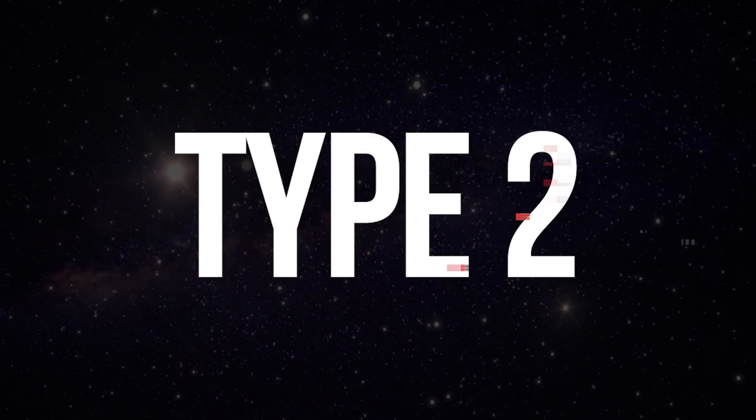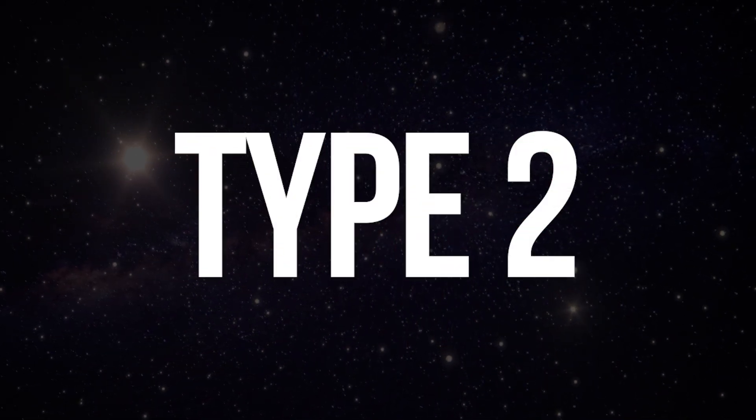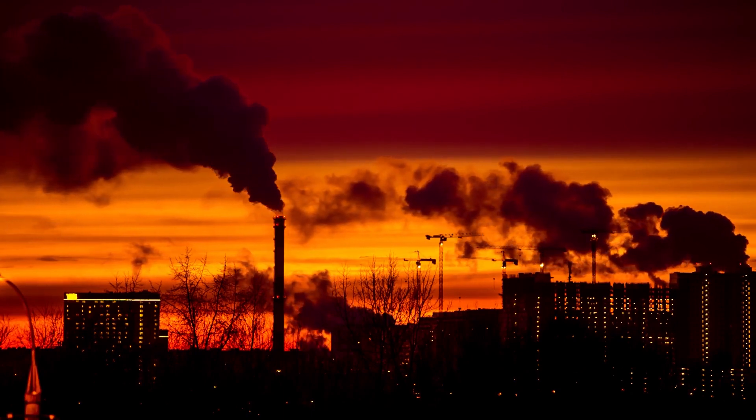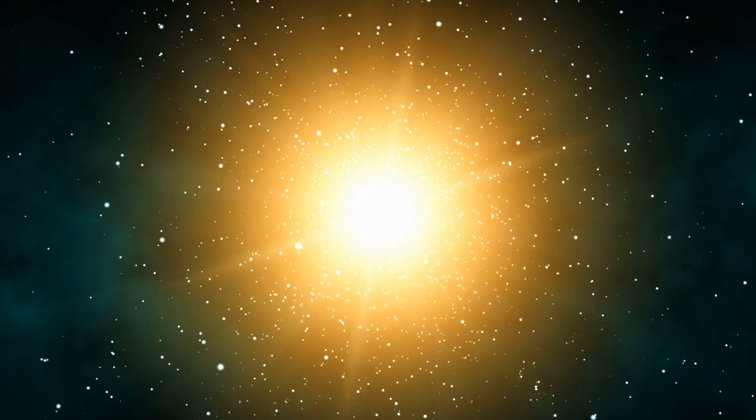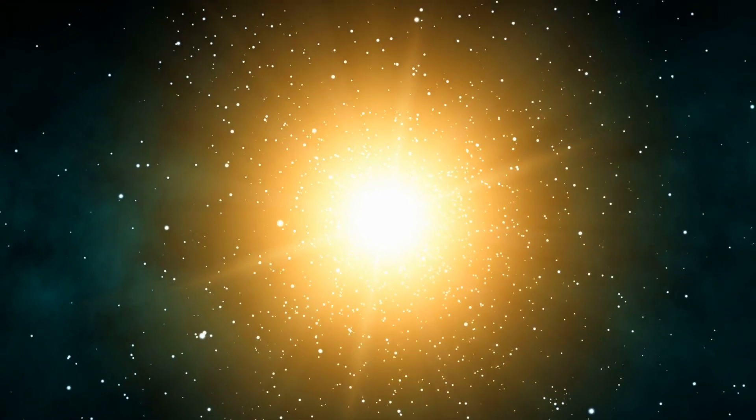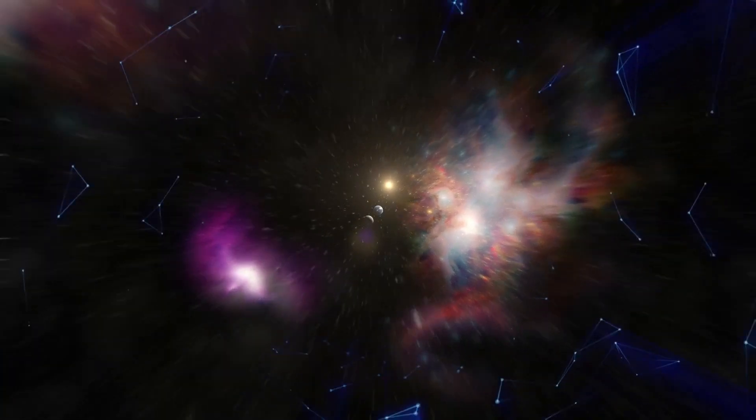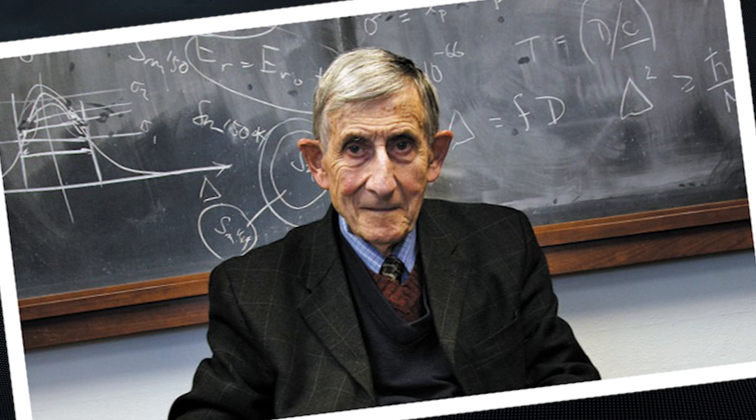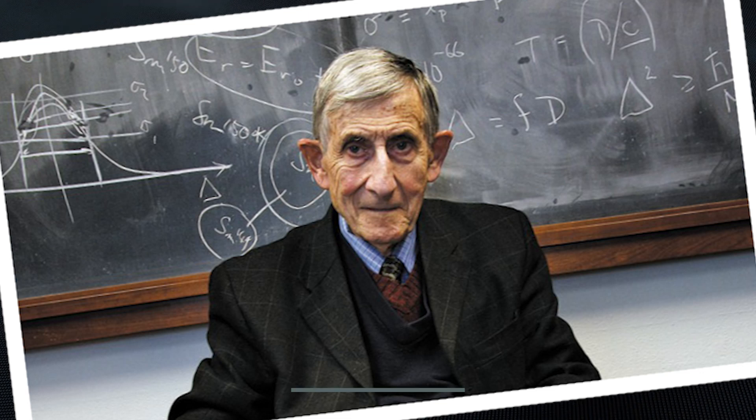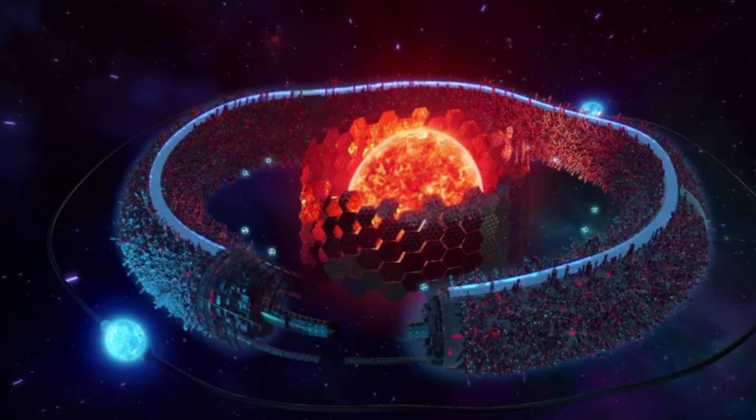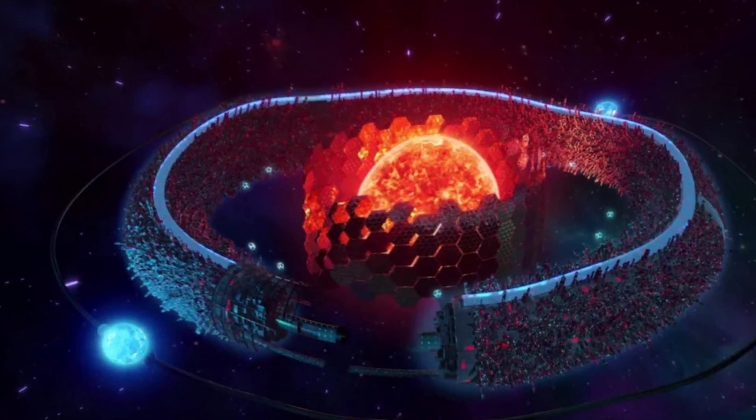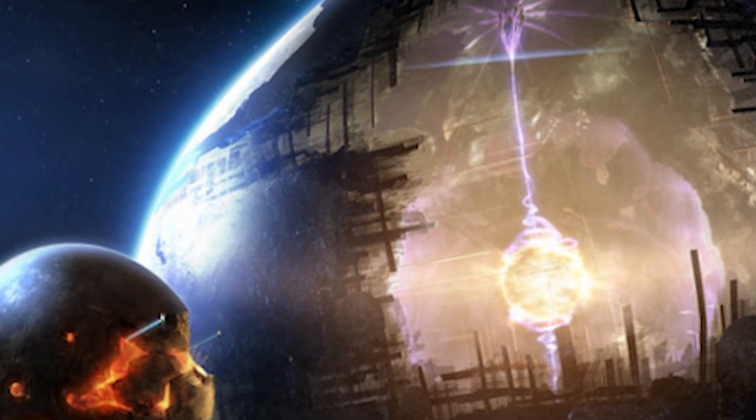After that, we evolve into a star civilization of type 2. We have advanced to the point where nuclear fusion energy is insufficient to meet our needs. The following logical step is to harness energy from nearby stars. Yes, this does not imply that we should install solar panels on the ocean floor, but rather on the star. The idea of a Dyson sphere was first proposed by theoretical physicist Freeman Dyson. We would erect a ring system around a nearby star and harness all of its energy for our own needs.